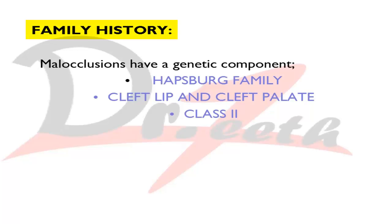We ask about family history because many malocclusions run in families. The famous Habsburg family had Class III mandibular prognathism. Cleft lip and palate have a recessive gene that can be transferred from parents to offspring. Class II also has a genetic component known to be transferred from parents to offspring, so you can assess whether the malocclusion has a genetic or environmental component.